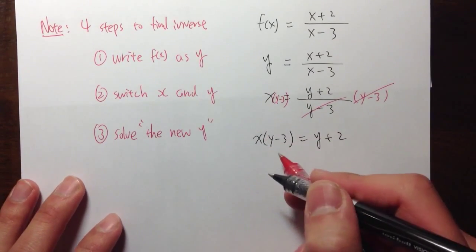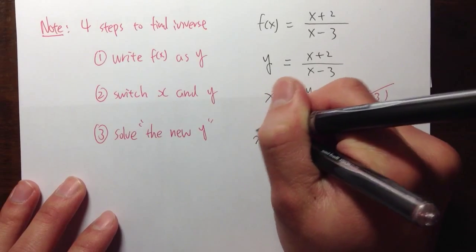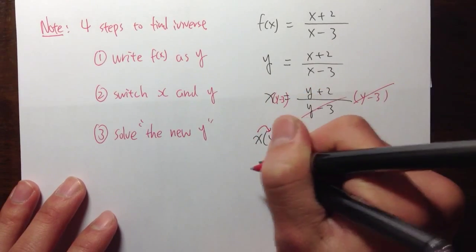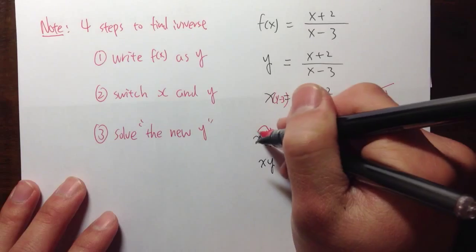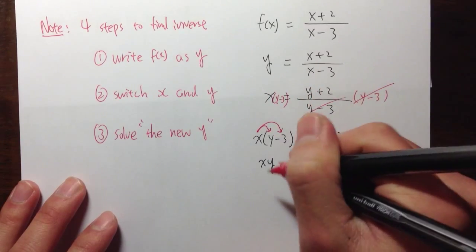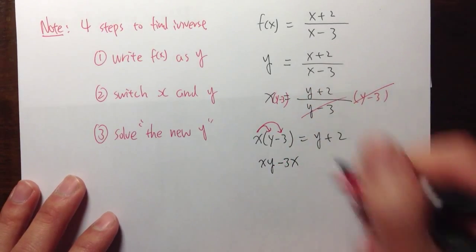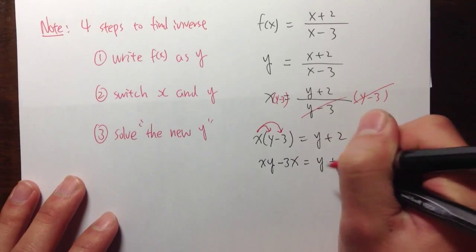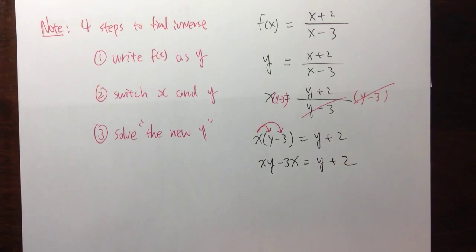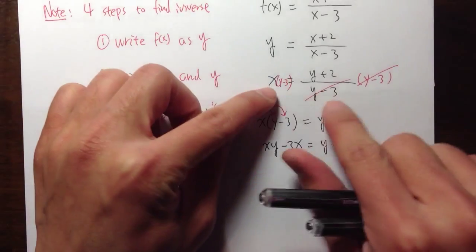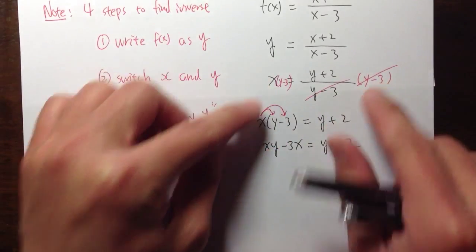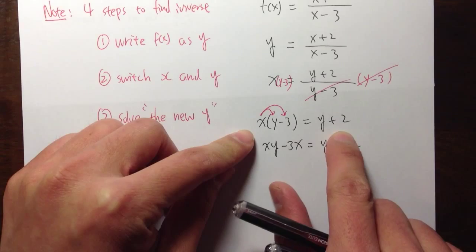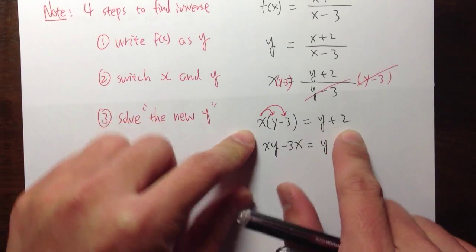And of course, right here, we can distribute. And let's see what do we get. x times y, we get x y. And then, x times negative 3, we get minus 3x. That's equal to y plus 2. As we can see that, once we multiply both sides by the denominator, y minus 3, we have just a regular equation, right? A normal fraction, which is nice.